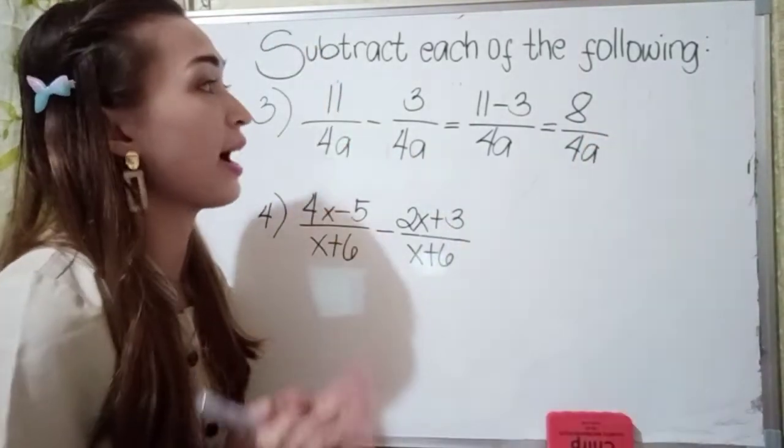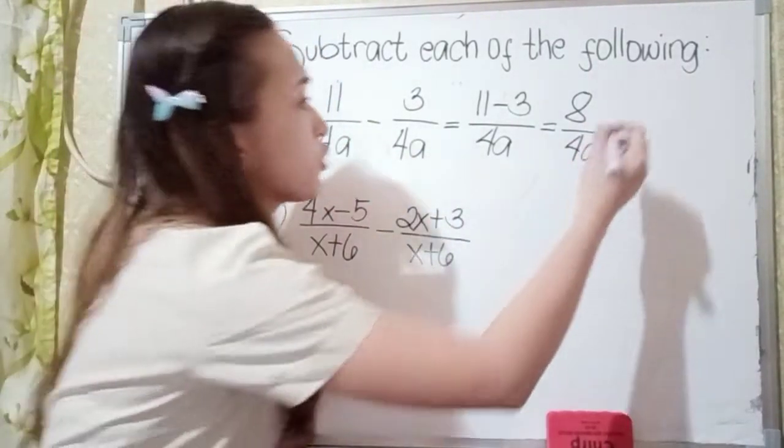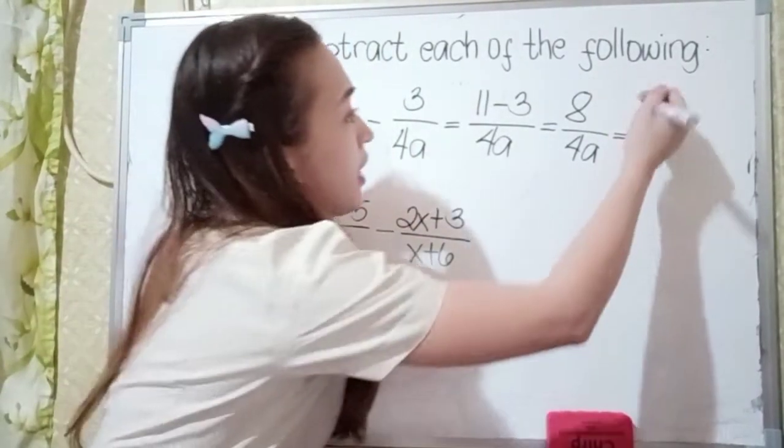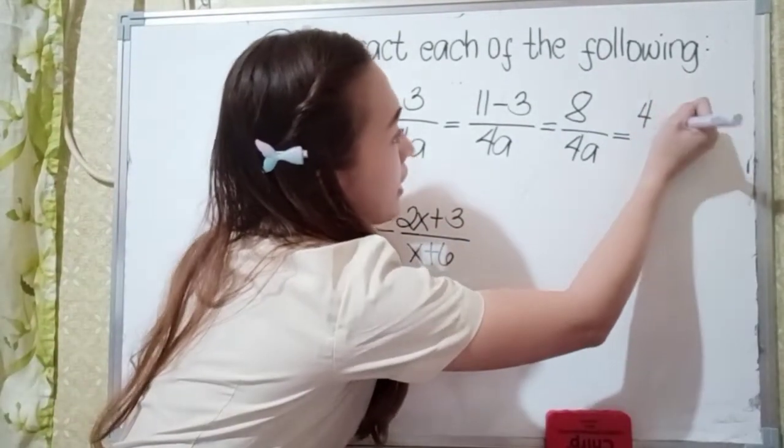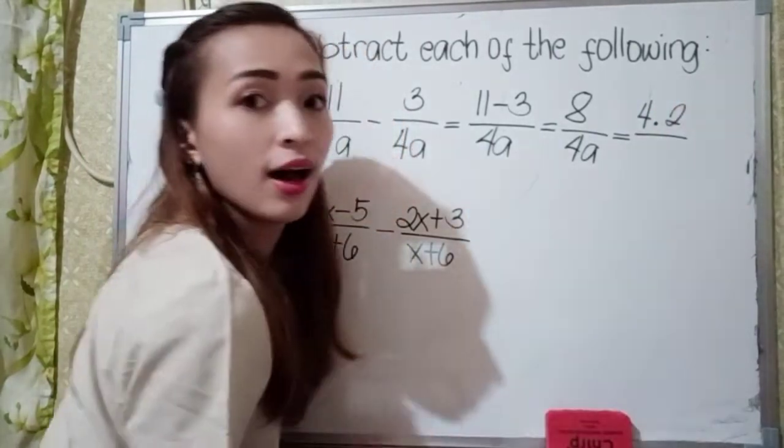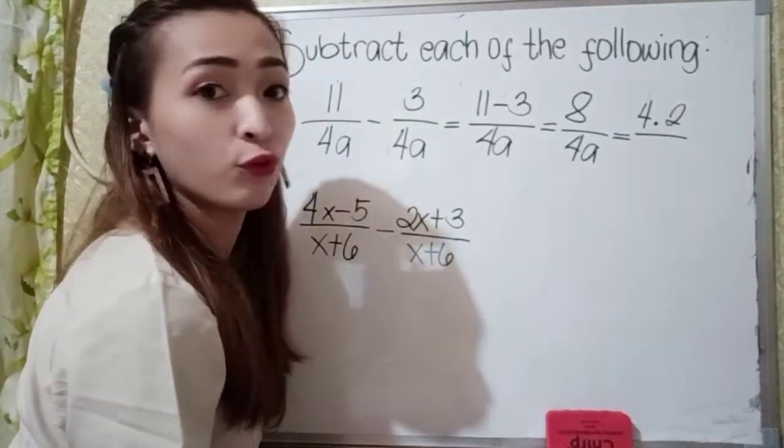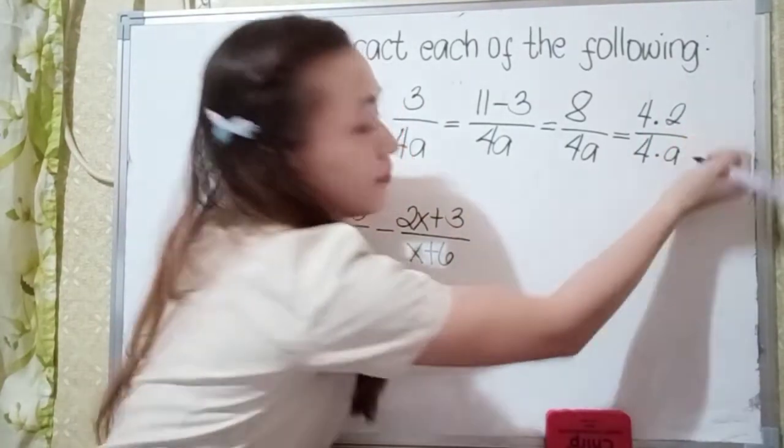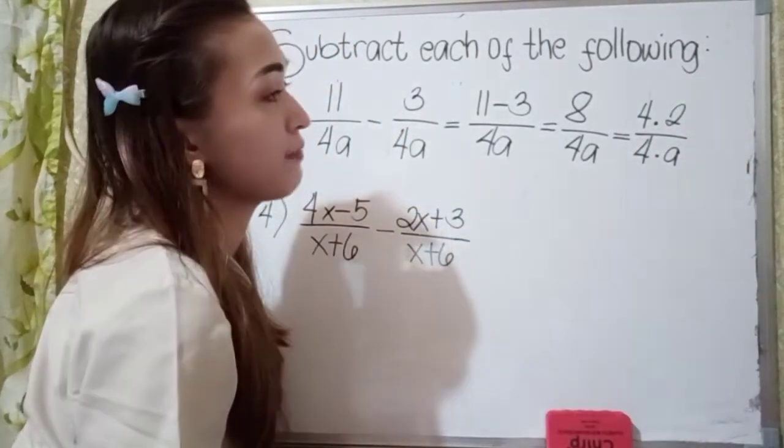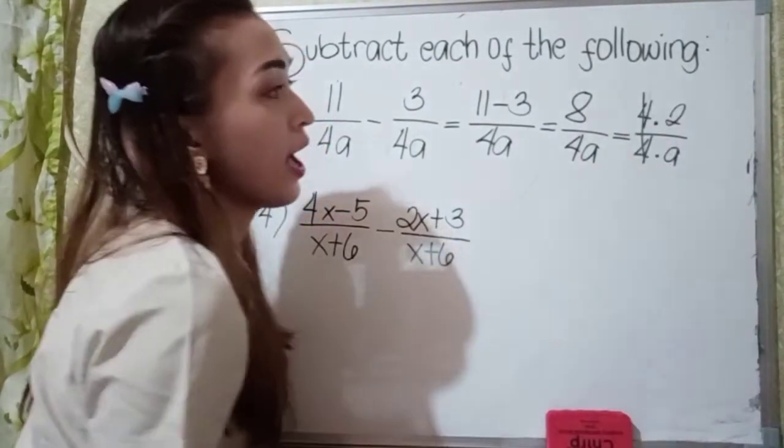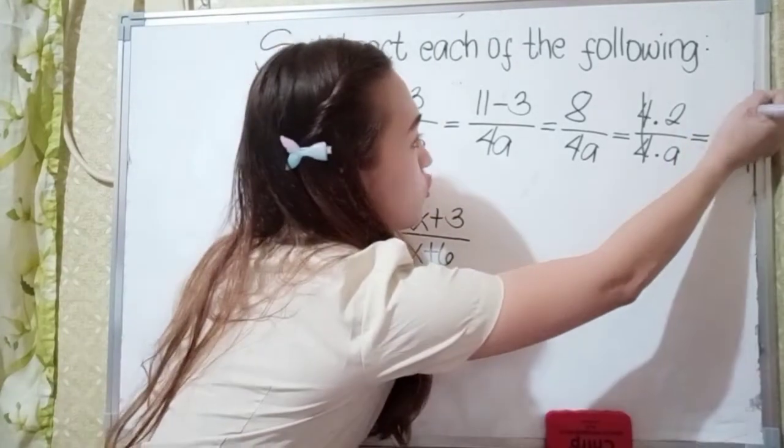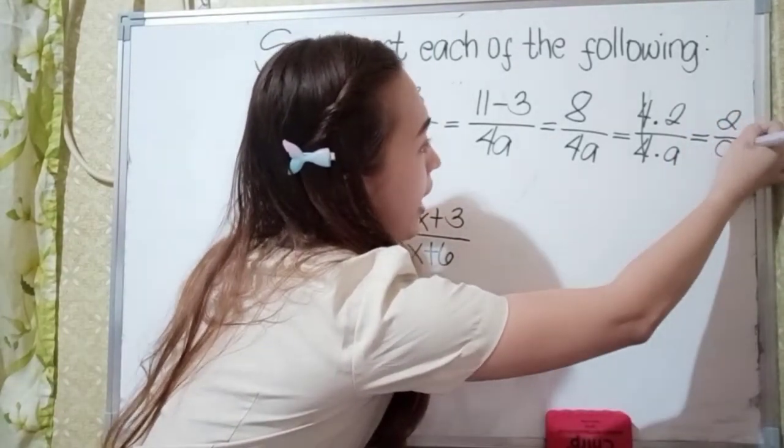Next, we can simplify 8 over 4a. So what are the factors of 8? The factors of 8 is 4 times 2. And then what are the factors of 4a? So we have 4 times a. Now simplify. Since 4 divided by 4 is 1, so that is cancelled. So our final answer is 2 over a.